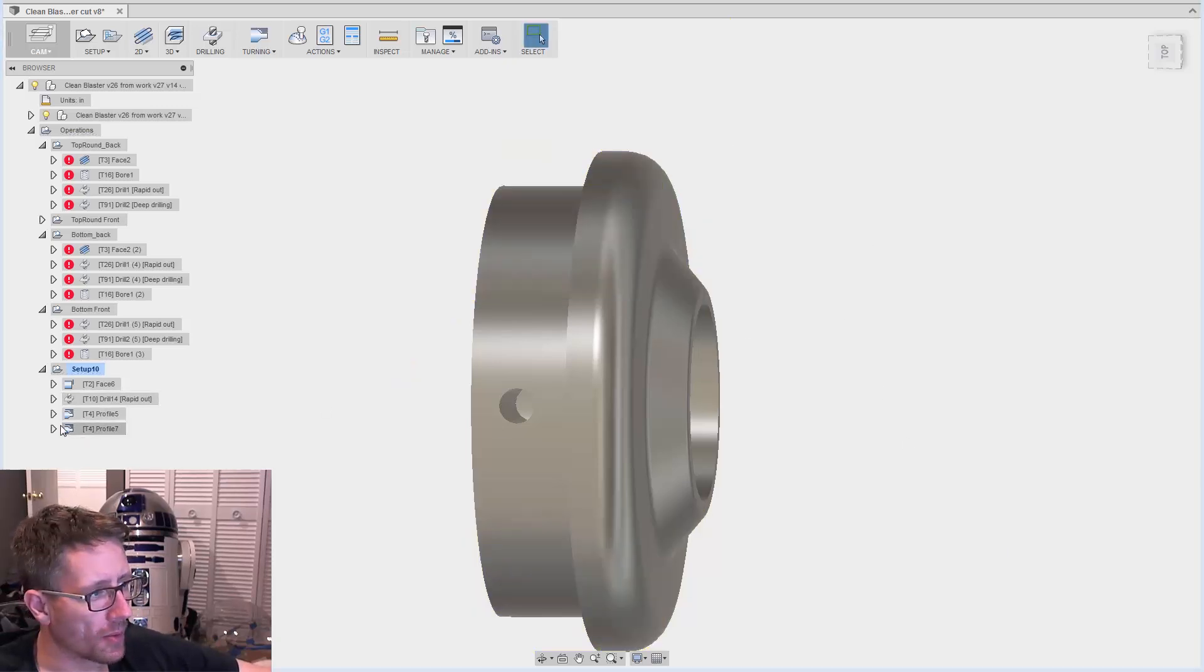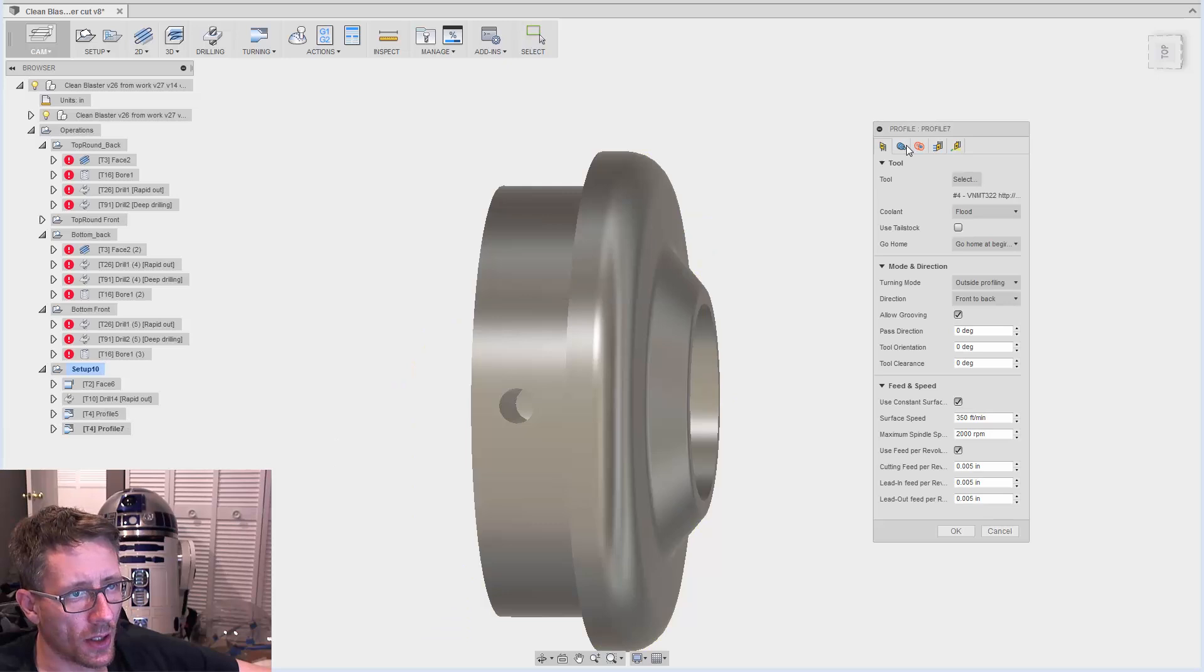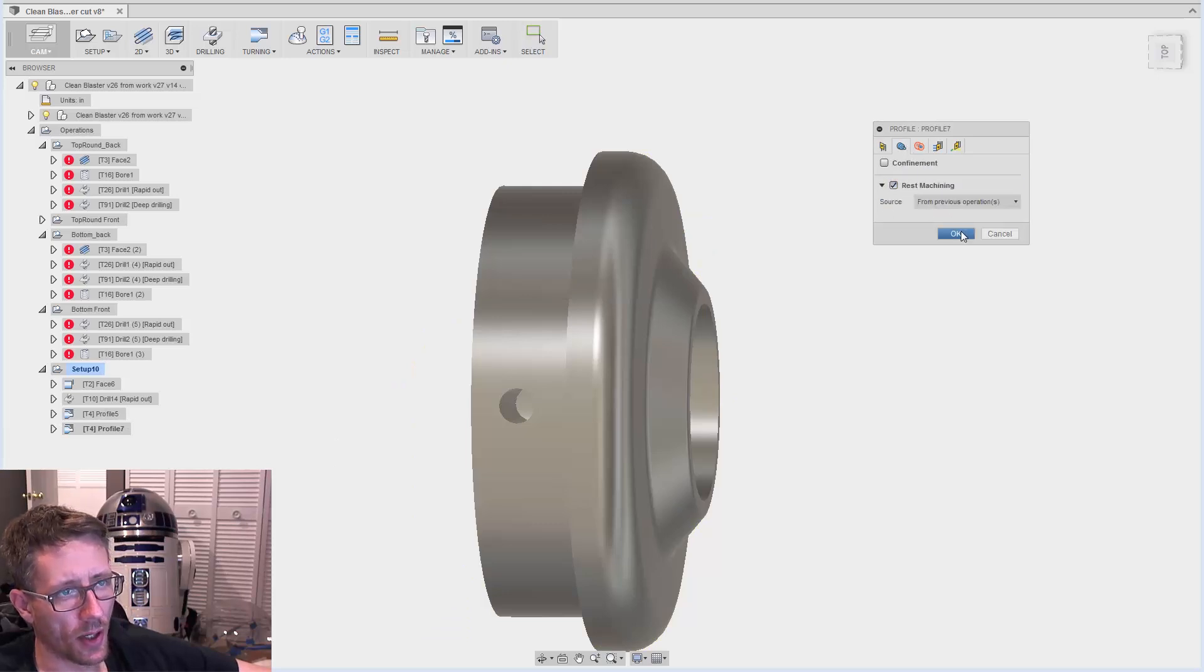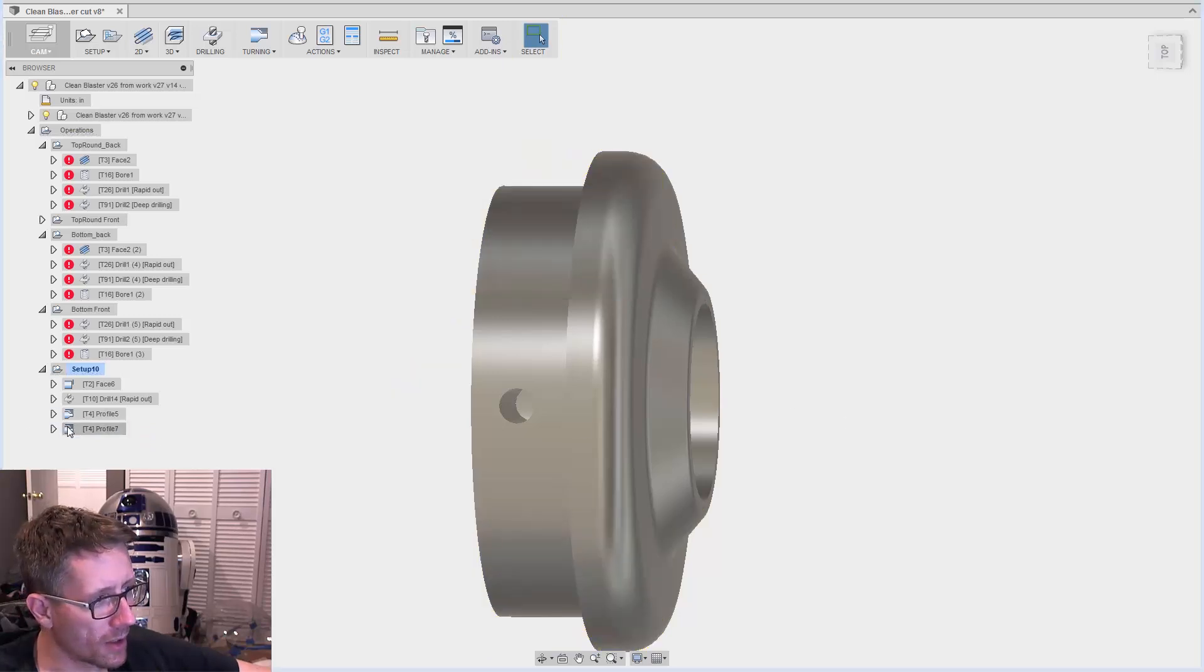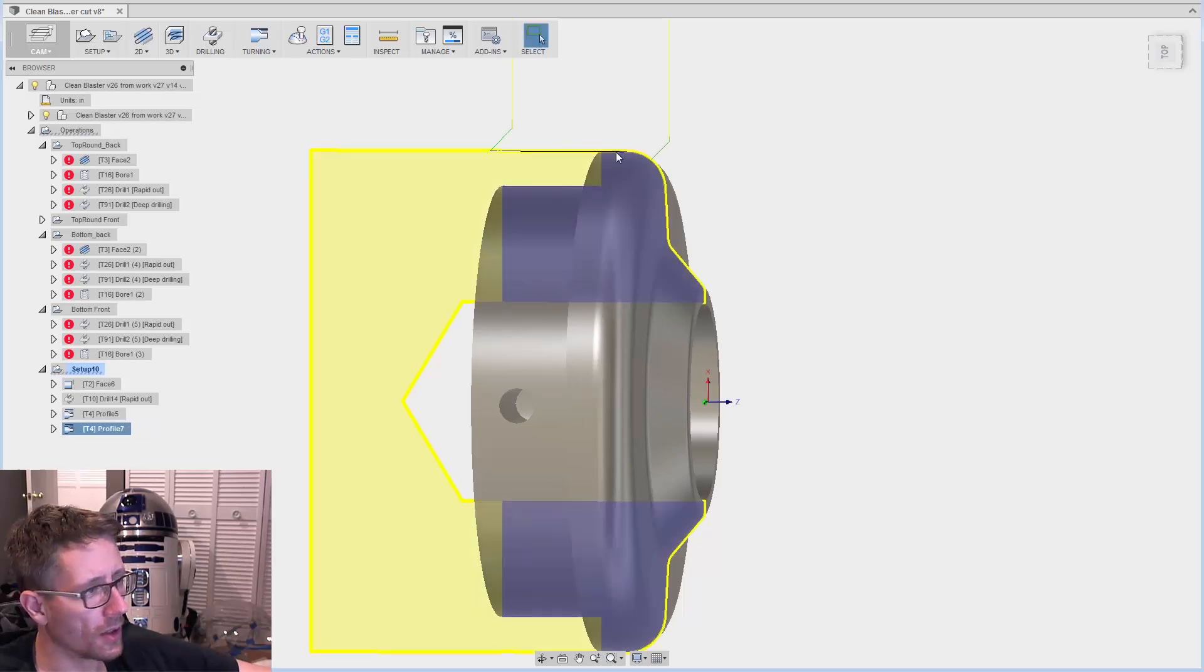Let's turn on rest machining again so we don't want it to cut parts that have already been cut. That looks pretty good. Go back in again - I don't want to allow the grooving. There we go.